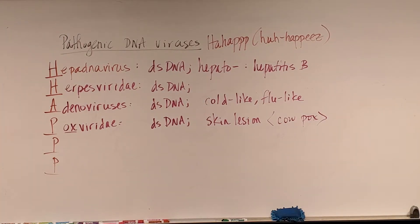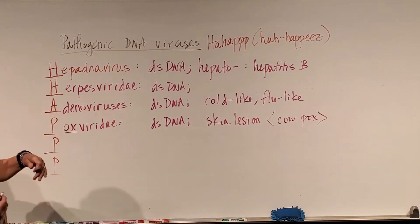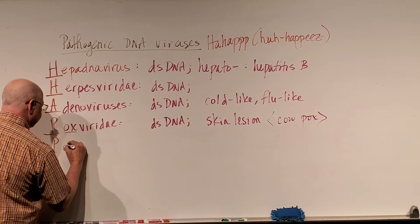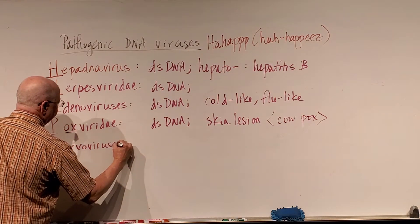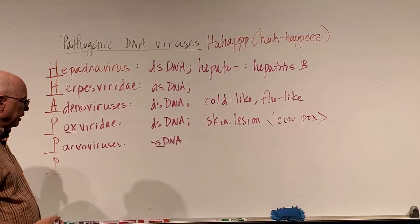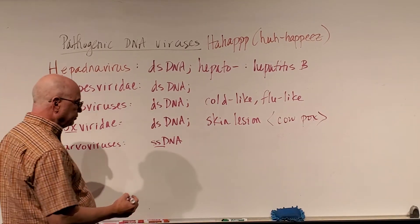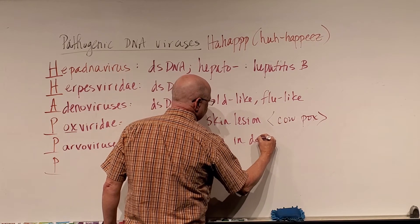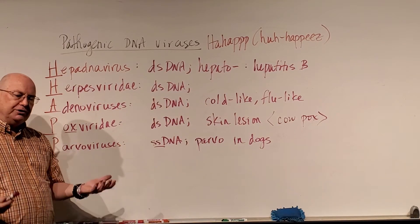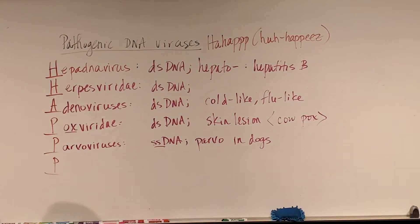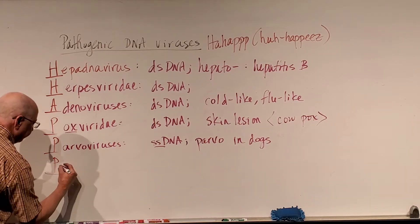The second P is Parvoviruses. These are the only single-stranded DNA viruses in our HAPPYS list — the rest are all double-stranded. Parvoviruses cause parvo in dogs, so if you have a dog and get it vaccinated, one of the vaccines is for the parvovirus.